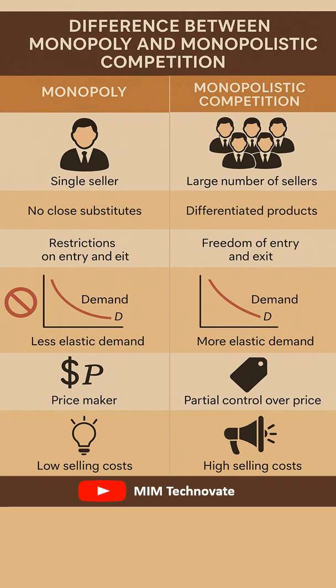In a monopoly, there are restrictions imposed on the entry of new firms and the exit of existing ones. On the other hand, monopolistic competition allows freedom of entry and exit for firms within the market.